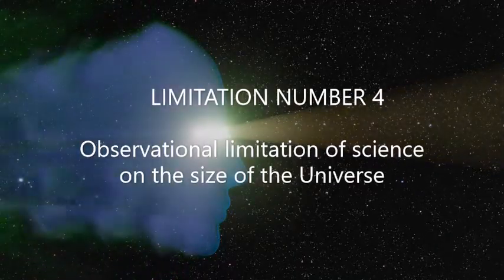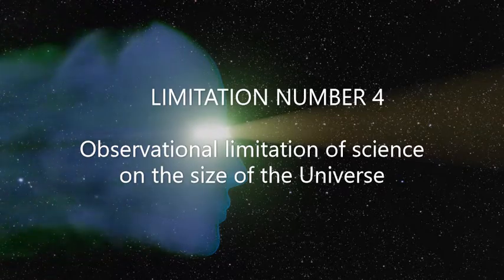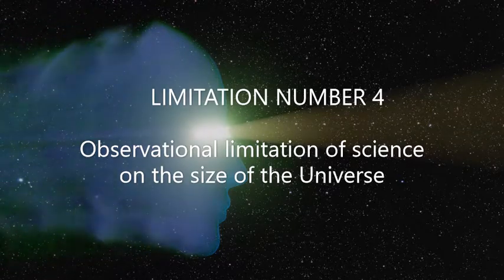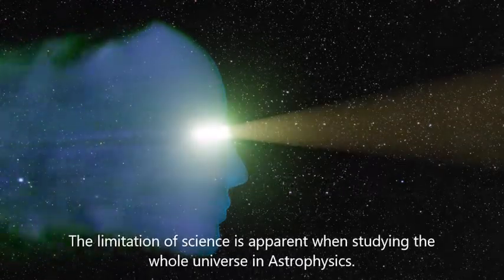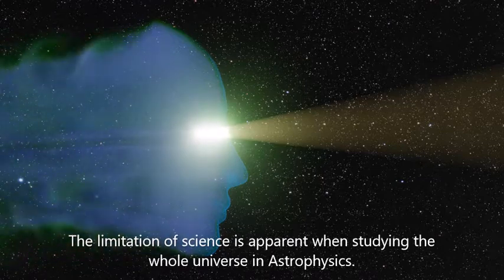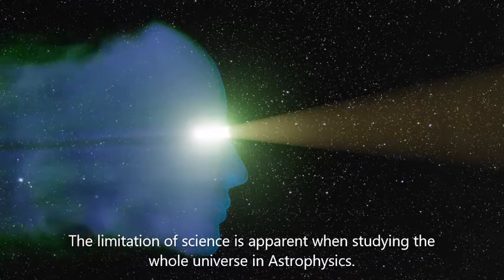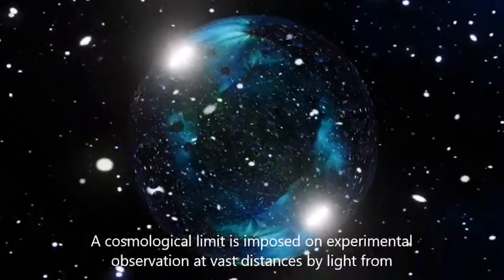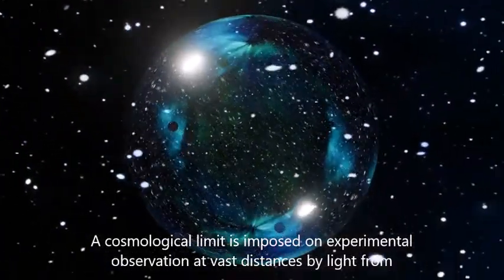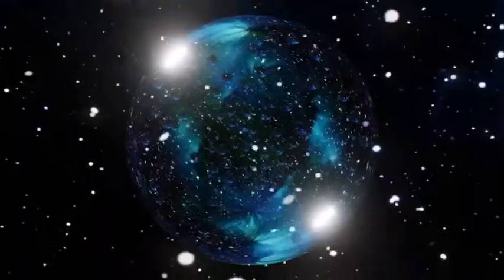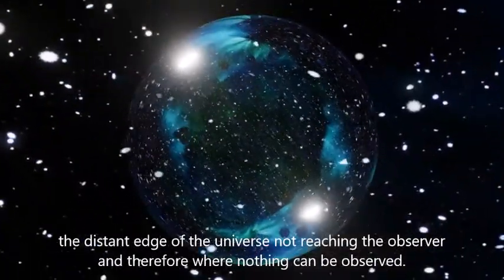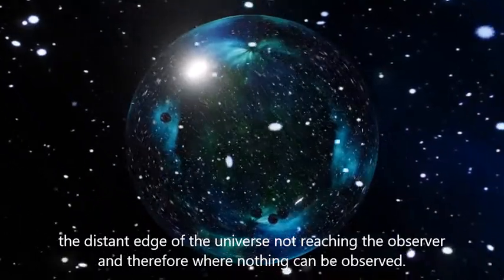Limitation Number 4: Observational limitation of science on the size of the universe. The limitation of science is apparent when studying the whole universe in astrophysics. A cosmological limit is imposed on experimental observation at vast distances by light from the distant edge of the universe not reaching the observer and therefore where nothing can be observed.